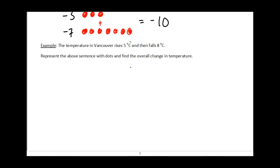So what we want to notice is that when we say rises five degrees Celsius, what we really mean is rising, meaning going up, that would be plus five. And then falls eight degrees Celsius, falling going down means negative eight. So if I want to add these two things together to find my overall change, I can do that by representing them with integers.